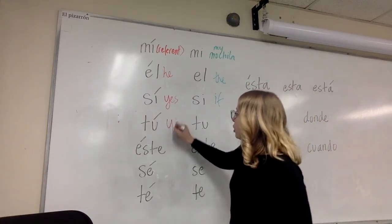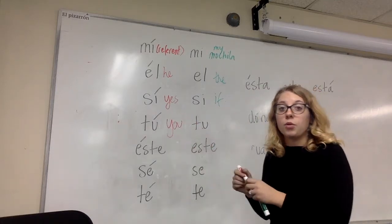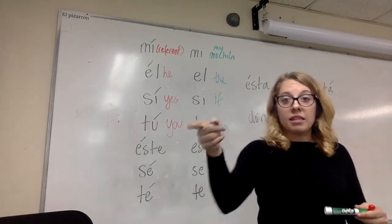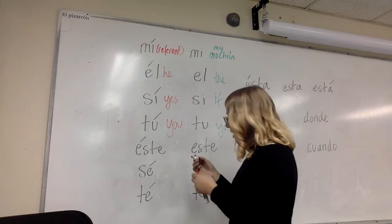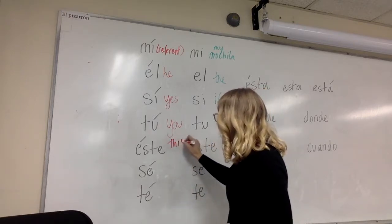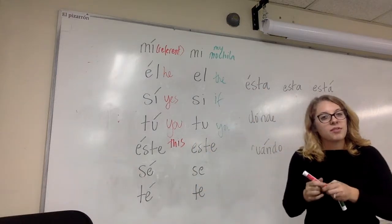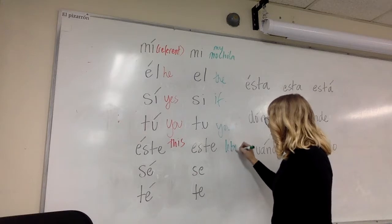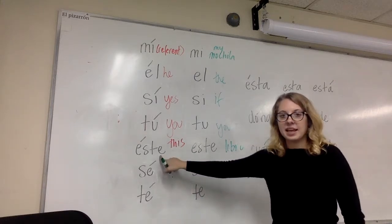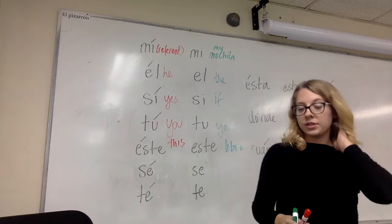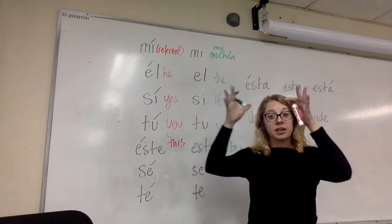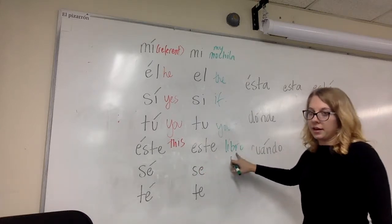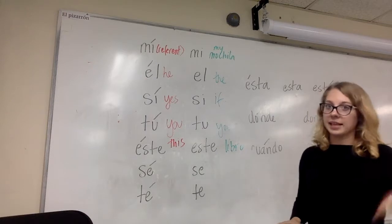'Tú' with an accent is used for 'you' as a subject, whereas 'tu' without an accent means 'your' — again, a possessive adjective. 'Éste' means 'this,' being very explicit. So 'éste es mi amigo Juan' — 'this' in the sense of presentational speech. But 'este' without an accent is a demonstrative adjective. So 'este libro' versus 'éste es el libro.' The accented form activates as a noun, whereas the unaccented form is an adjective that has to modify a noun.